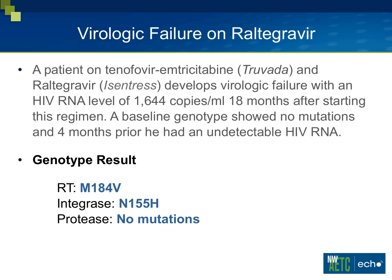Let's look at what particularly happened in this individual who had virologic failure. They had a genotype done. This is a very typical pattern for raltegravir failure: the M184V mutation showed up as resistance to emtricitabine, and integrase resistance showed up as an N155H mutation. There were no protease inhibitor mutations, which you wouldn't expect since the person was not taking a protease inhibitor. Some of these nomenclatures like N155H are going to be new to most of you, but hopefully by the end of the talk you'll have a deeper understanding of the common pathways and resistance mutations with the integrase class.